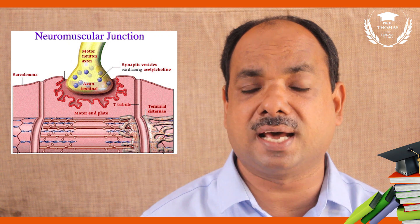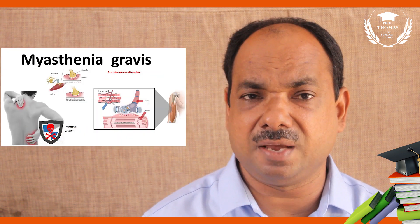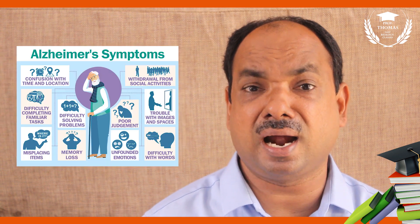Neurotransmitters are synthesized in the cytone and transported through microtubules into synaptic vesicles. Calcium ions play a major role in the release of synaptic vesicles. The junction between a neuron and a muscle is called the neuromuscular junction. Diseases associated with neurons include myasthenia gravis and Alzheimer's disease, in which beta-amyloid plaques are formed.